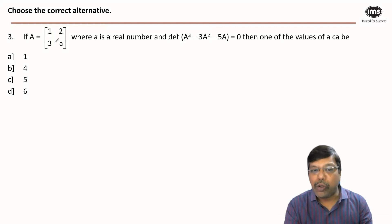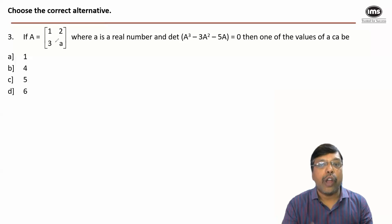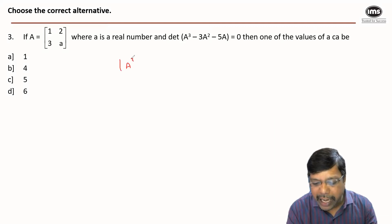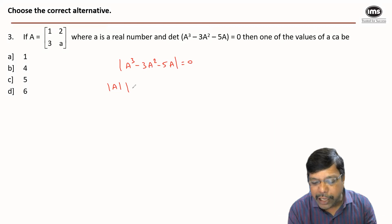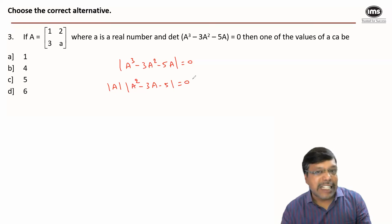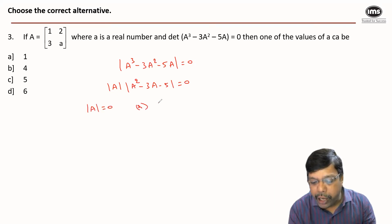We have A as a 2×2 matrix given, and it is mentioned that det(A³ - 3A² - 5A) = 0. Taking A as a common factor, I can write this as det(A) · det(A² - 3A - 5I) = 0. By the standard logic that if the product of two numbers is 0 then either of them is 0, either det(A) = 0 or det(A² - 3A - 5I) = 0.